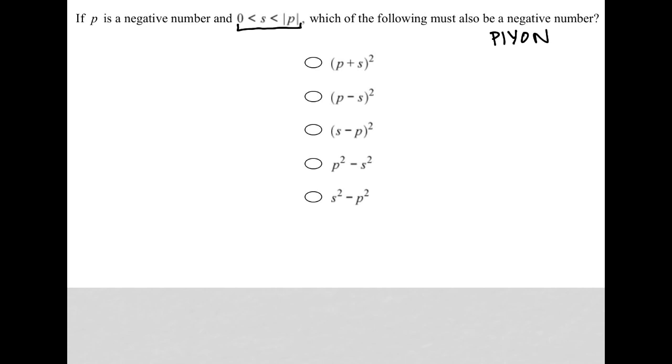So we're going to make up a number for S. All we know for sure is that S has to be greater than zero, so I'm going to say S is equal to two, because two is greater than zero.